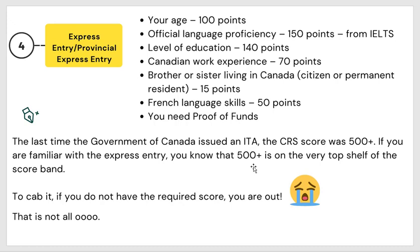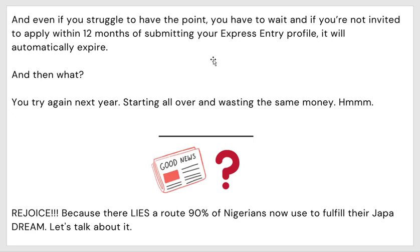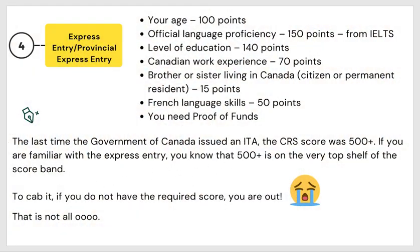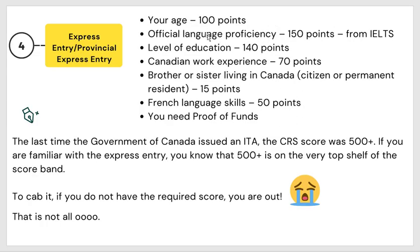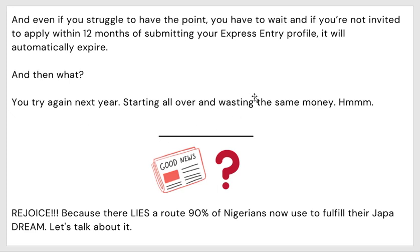If you don't have the required points, you are out. Even if you struggle to have the points, you have to wait, and if you are not invited to apply within 12 months of submitting your express entry profile, it will automatically expire. All the work you put in, all those funds — needless. If you are not called it expires, and then you start all over again, wasting the same money to redo your IELTS and everything.